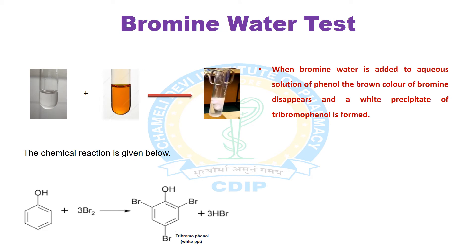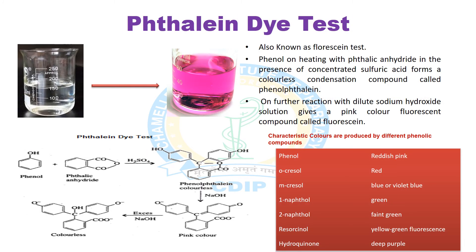The next test is the bromine water test. Phenol undergoes electrophilic substitution reaction with bromine. When bromine water is added to an aqueous solution of phenol, the brown color of bromine disappears and a white precipitate of tribromophenol is formed. The reaction produces tribromophenol, which shows as white precipitates or white turbidity, as demonstrated in the test tubes shown.